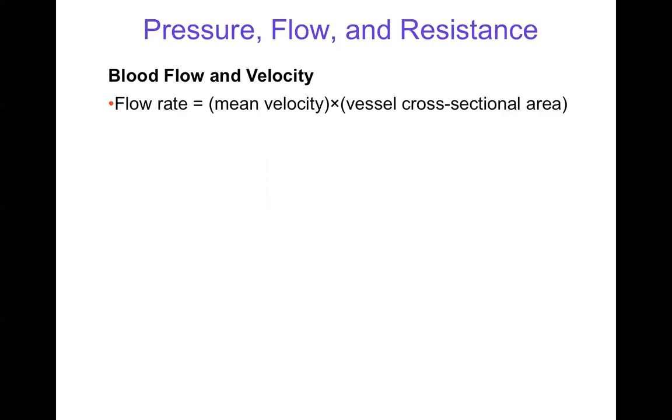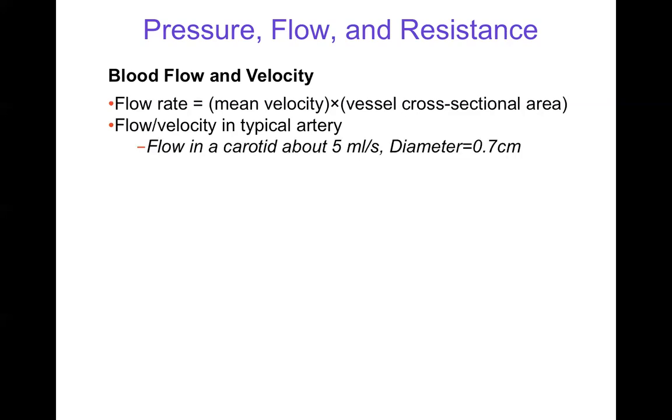Blood flow and velocity: flow rate Q can be expressed as a mean velocity, like centimeters per second, times a cross-sectional area, like centimeters squared. A typical flow and velocity in an artery, something like the carotid arteries in your neck, they may have a velocity of five millimeters,